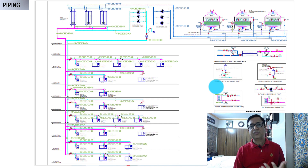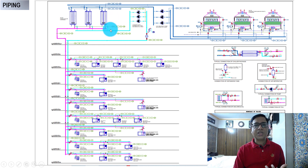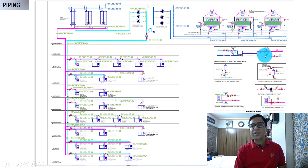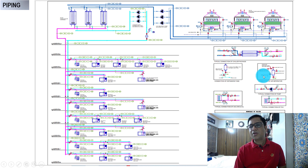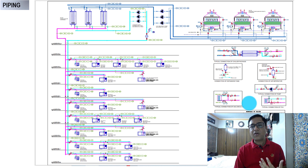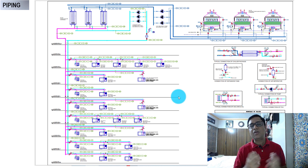Here is another example of a similar schematic where you can find all connections — chillers, pumps, cooling towers, what the connections are, what the valves are. We also get typical connections for the chiller package, air handling units, pumps, expansion tank, and fan coil units. Everything is recorded, so this becomes a guiding document for us to start chilled water piping.